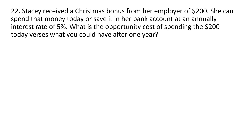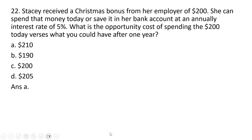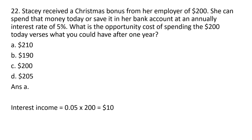Question 22. Stacy received a Christmas bonus from her employer of $200. She can spend that money today or save it in her bank account at an annual interest rate of 5%. What is the opportunity cost of spending the $200 today versus what she could have after one year? The correct answer is A: $210. If you put this money in an account for one year at 5%, you'll have interest income of $10 — 5% of $200 — giving you $210 after one year.